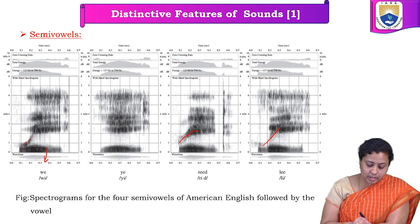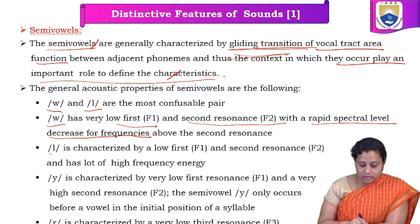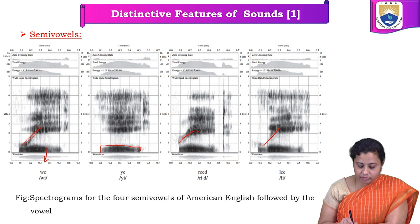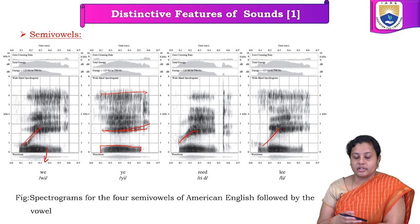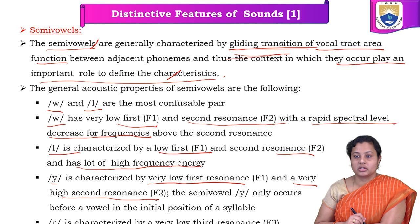For 'v,' we see the low first formant frequency rapidly decreasing into the second formant frequency. The 'l' sound is characterized by a low first formant frequency, and the second formant frequency has a lot of frequency energy — high energy — which can be seen from the spectrogram. The 'y' sound is characterized by a low first formant frequency and a very high second formant frequency.